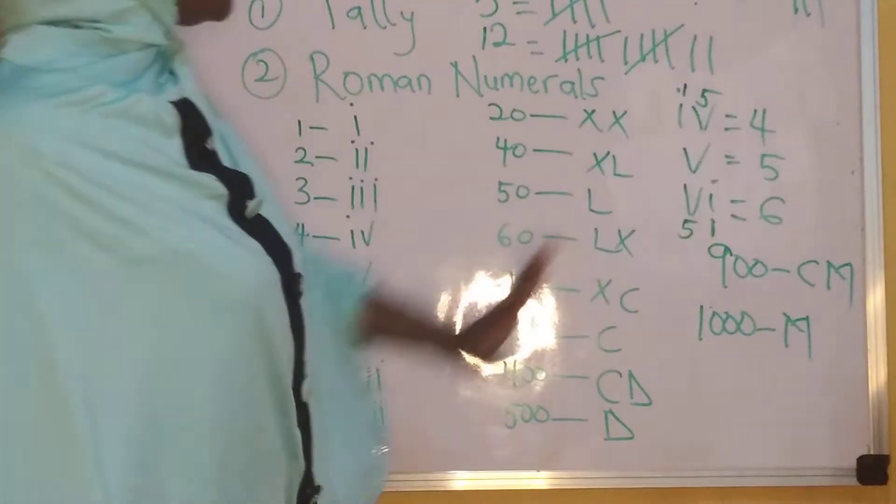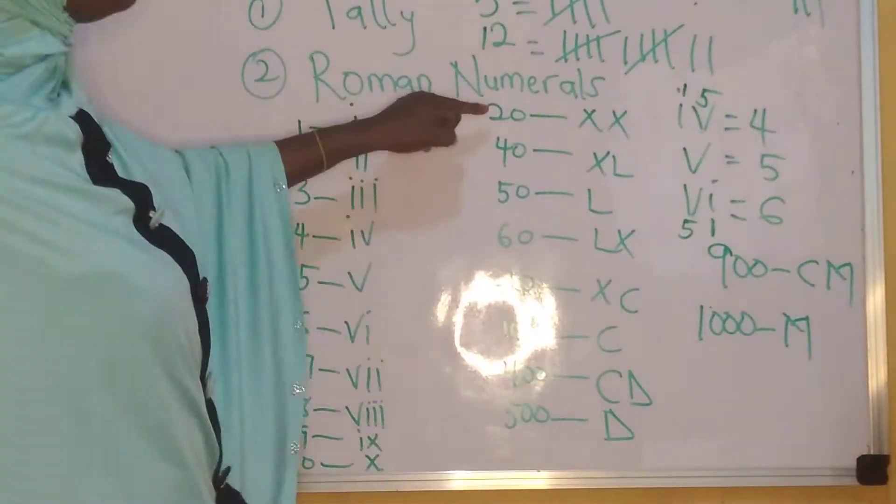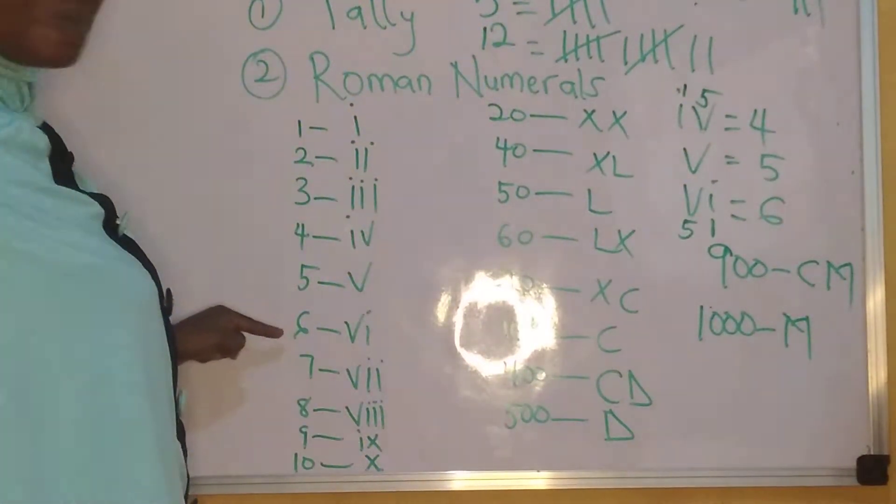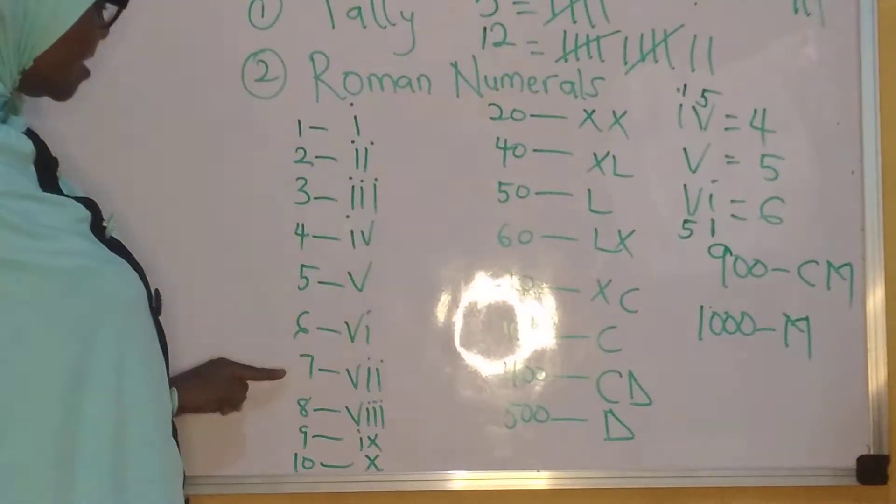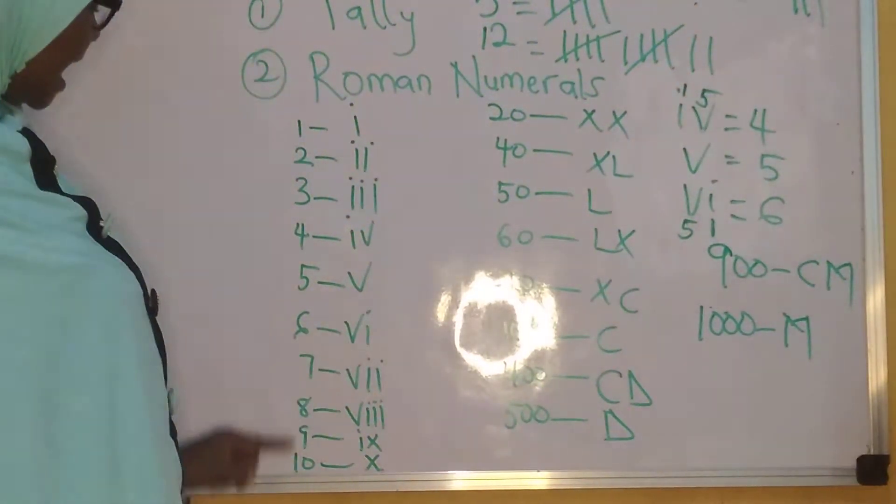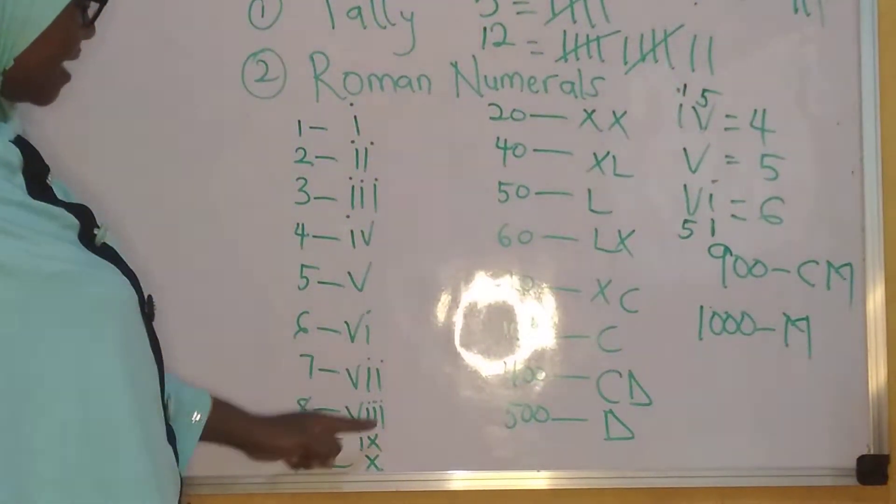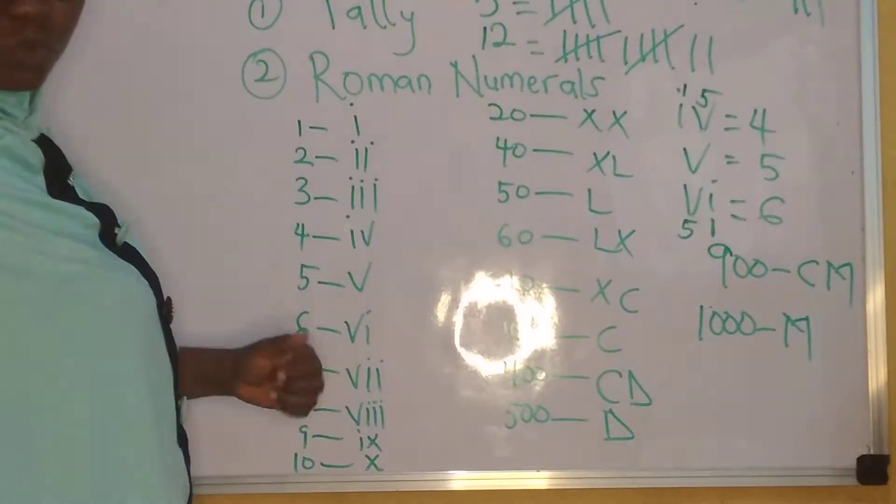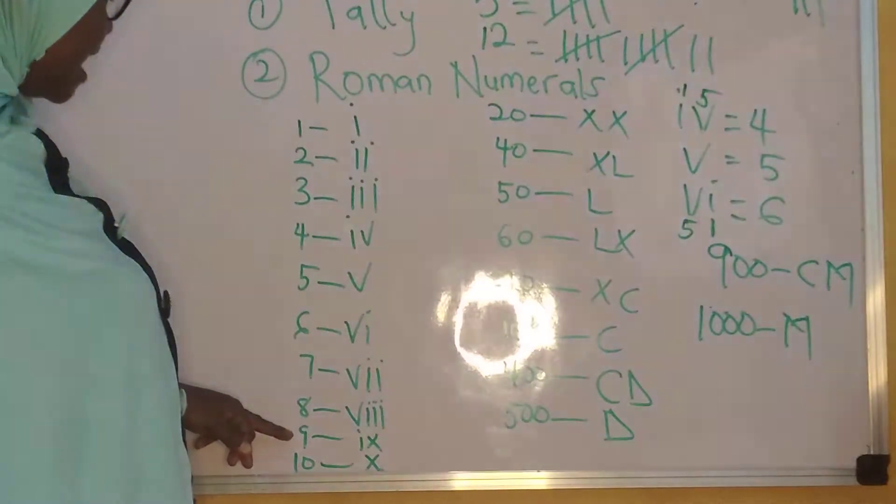Since you have established that fact, let's proceed through other numbers. We stopped at 6, which is VI. Now, 7 is VII. That is 5 plus 1 plus 1. 8 is VIII. That is 5 plus 1 plus 1 plus 1. And that gives us 8.